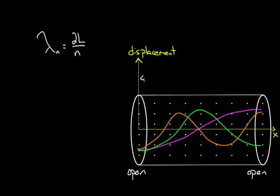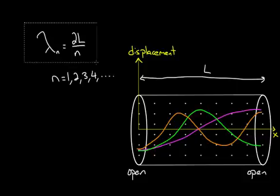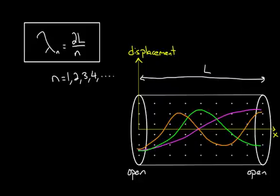For any possible wavelength in an open-open tube, it depends only on the length of the tube L and N, where N is which harmonic we're talking about. One is the fundamental, two is the second harmonic, three is the third harmonic, and so on. This gave you every possible wavelength. The question is, can we do the same thing if we had an open-closed end?